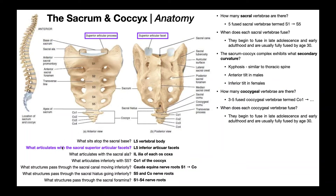What structure articulates with the sacral superior articular facets? You can see the facets in both anterior and posterior views. In the posterior view, you can see the surface that articulates with the inferior articular facet of the L5 vertebra. The superior articular facets of S1 articulate with the inferior articular facets of L5 to form the zygapophysial joints, or facet joints, between the lumbar spine and the sacrum — and these are synovial joints.